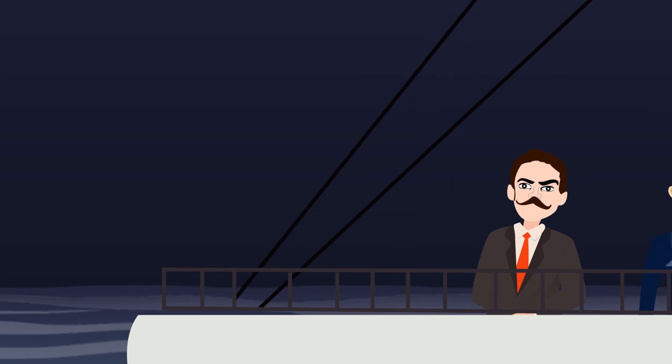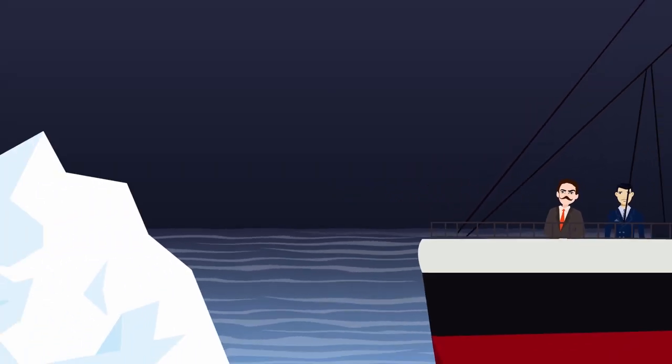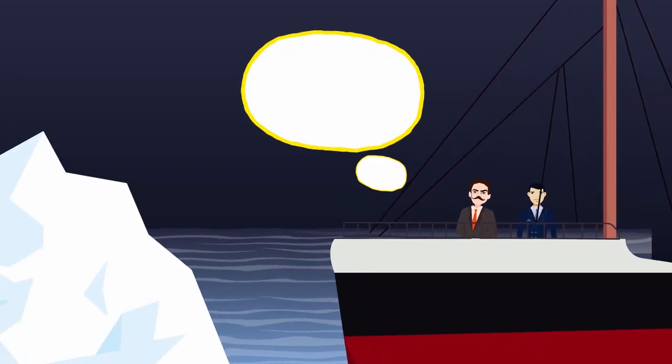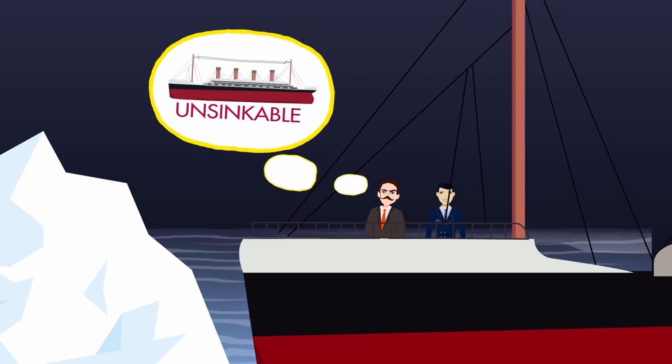Apparently, Bruce Ismay, the chairman of the company that owned the Titanic, was on board the ship as it was sinking, and he was like, Oh no, dude, this is my investment. This ship is supposed to be unsinkable. We're going to look so dumb if we're found like this.